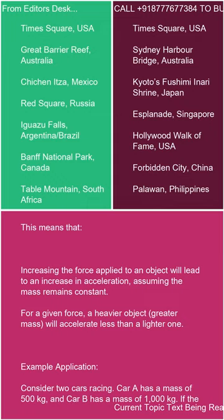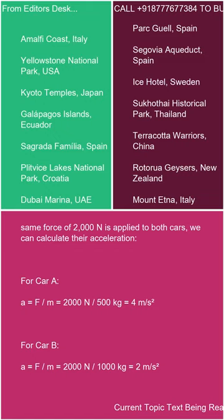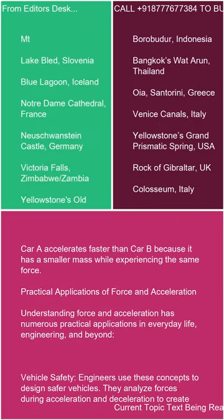Consider two cars racing. Car A has a mass of 500 kilograms and Car B has a mass of 1,000 kilograms. If the same force of 2,000 N is applied to both, Car A accelerates at 2,000 N ÷ 500 kg = 4 m/s², while Car B accelerates at 2,000 N ÷ 1,000 kg = 2 m/s². Car A accelerates faster because it has a smaller mass while experiencing the same force.